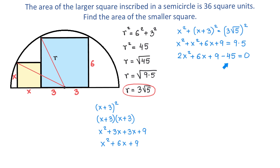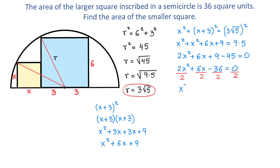Then 9 minus 45 is negative 36, giving us 2x squared plus 6x minus 36 equals 0. We have a quadratic equation, and one way to solve it is to move all terms to one side and try factoring. Notice we can simplify by dividing each term by 2, giving the simplified equation x squared plus 3x minus 18 equals 0.